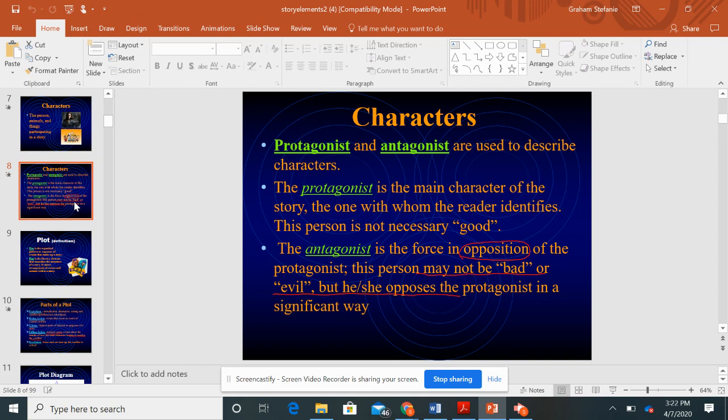This person does not necessarily have to be good, but it's usually the main character and one of the characters that has the most change. They evolve in some way. We also have the antagonist. The antagonist is the force that's in opposition of the protagonist. This person may not be bad or evil, but he or she opposes the protagonist in a significant way.